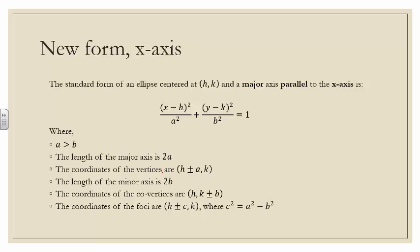The length of the major axis is 2a. The coordinates of the vertices are h plus or minus a, comma k. The length of the minor axis is 2b. The coordinates of the co-vertices are h comma k plus or minus b. The coordinates of the foci are h plus or minus c, comma k, where c squared equals a squared minus b squared.